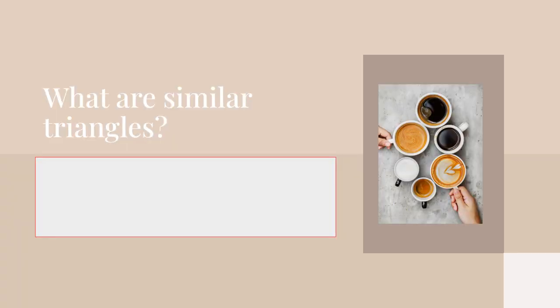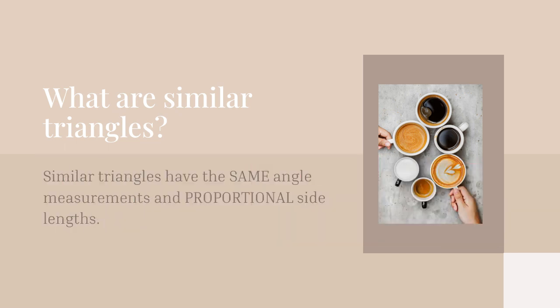We have already learned about similar triangles. So what are similar triangles? Similar triangles have the same angle measurements and proportional side lengths. They will have the exact same angle measurements and proportional side lengths.